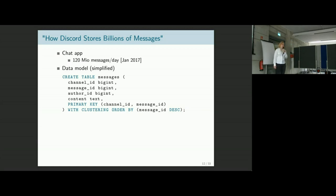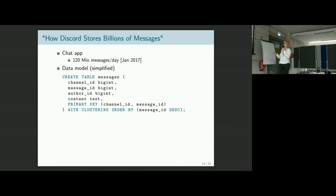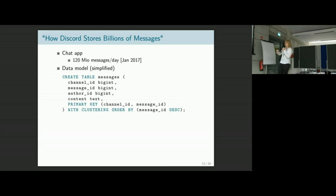They started initially with a deployment in MongoDB for their first version. Eventually they found out that's not going to scale with the number of customers they have. So they migrated to Cassandra. The data model in a simplified way had a table of messages. Every message was associated with a channel, had a message ID, an author, and content. You could find a message using channel and message ID combined as key, and they wanted to show messages in order of when they were posted, with message IDs given out incrementally.